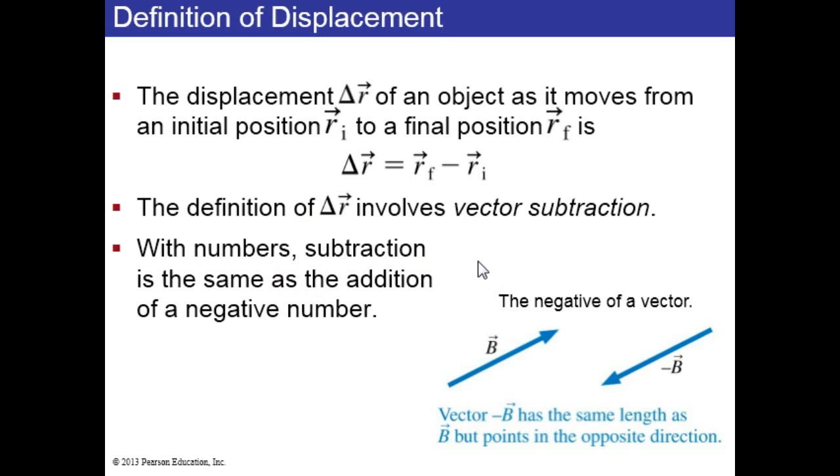For example, 5 minus 3 equals 2. You can also equivalently say 5 plus negative 3 equals 2. But we do the same thing with vectors. A minus b is a plus negative b, where the negative of a vector is a vector with the same length but pointing in the opposite direction.